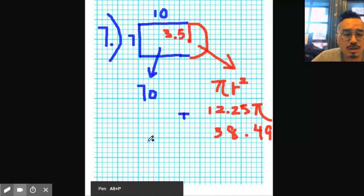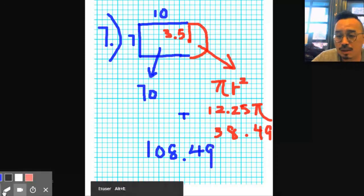And then you add them, right, because you want the sum of the two. So that's 108.49. Not too bad, it's not that bad. It's kind of fun actually, these kind of questions.